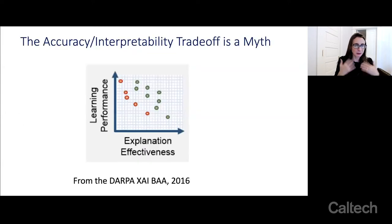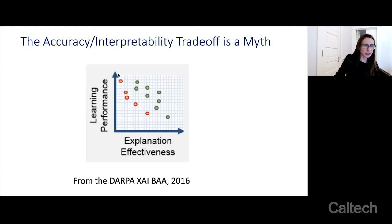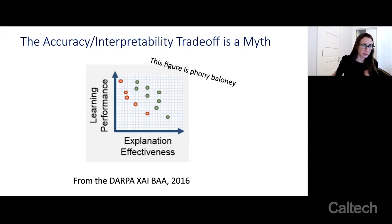There is a plot that a lot of people have in their mind: that there is a trade-off between accuracy and interpretability. I claim there's no real scientific evidence for this. This figure is from the DARPA Explainable AI BAA, and it seems to indicate that as learning performance improves, your ability to explain gets worse. I have a lot of issues with this plot. The first is that the axes have no quantification — the axes are unquantified and I don't even know what 'explanation effectiveness' means.